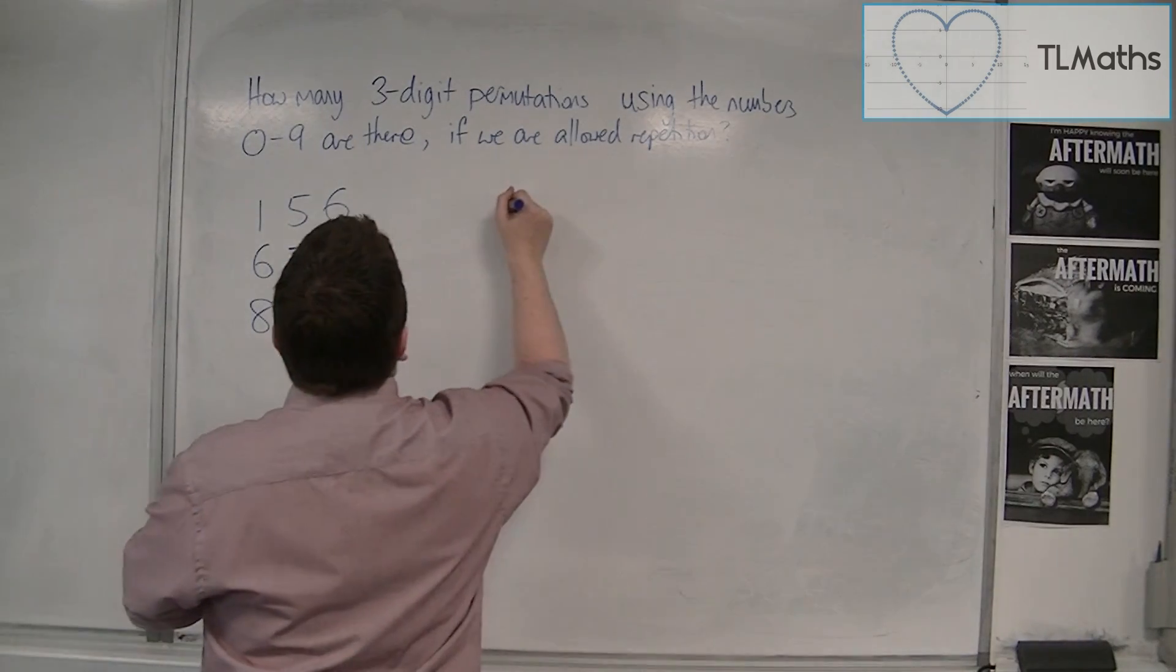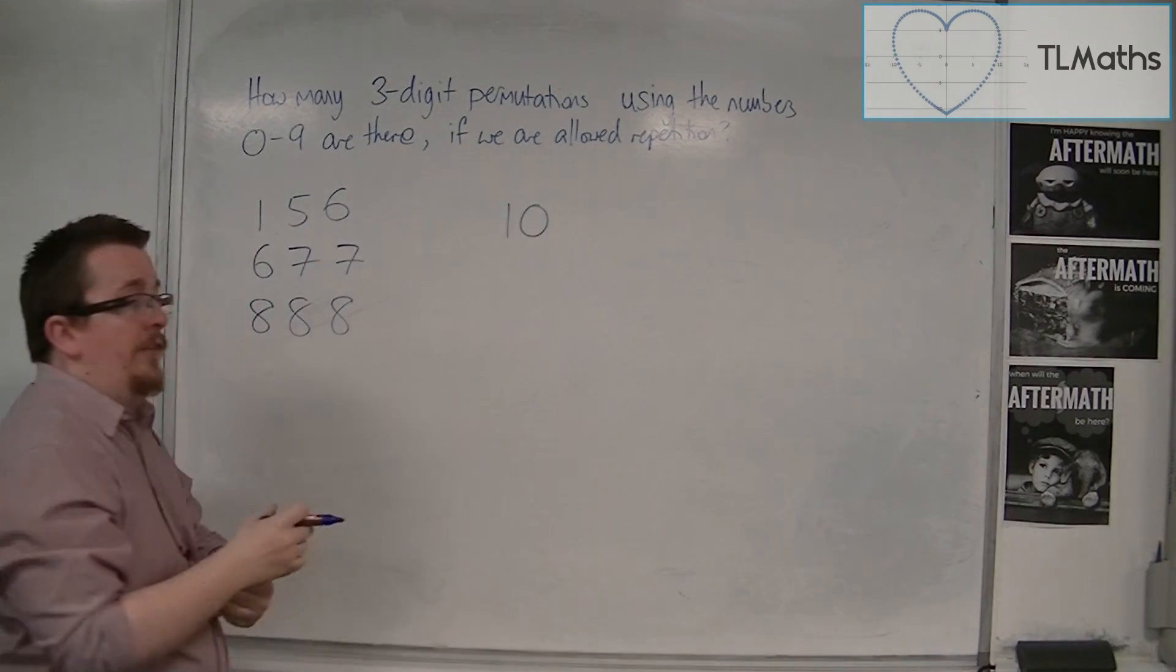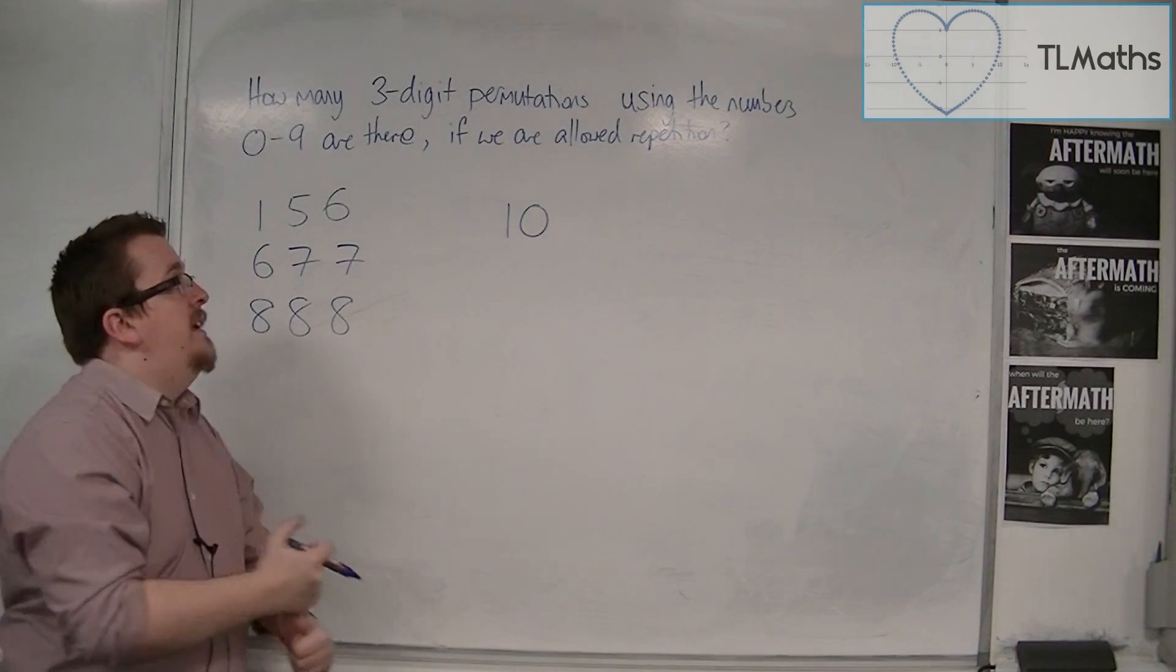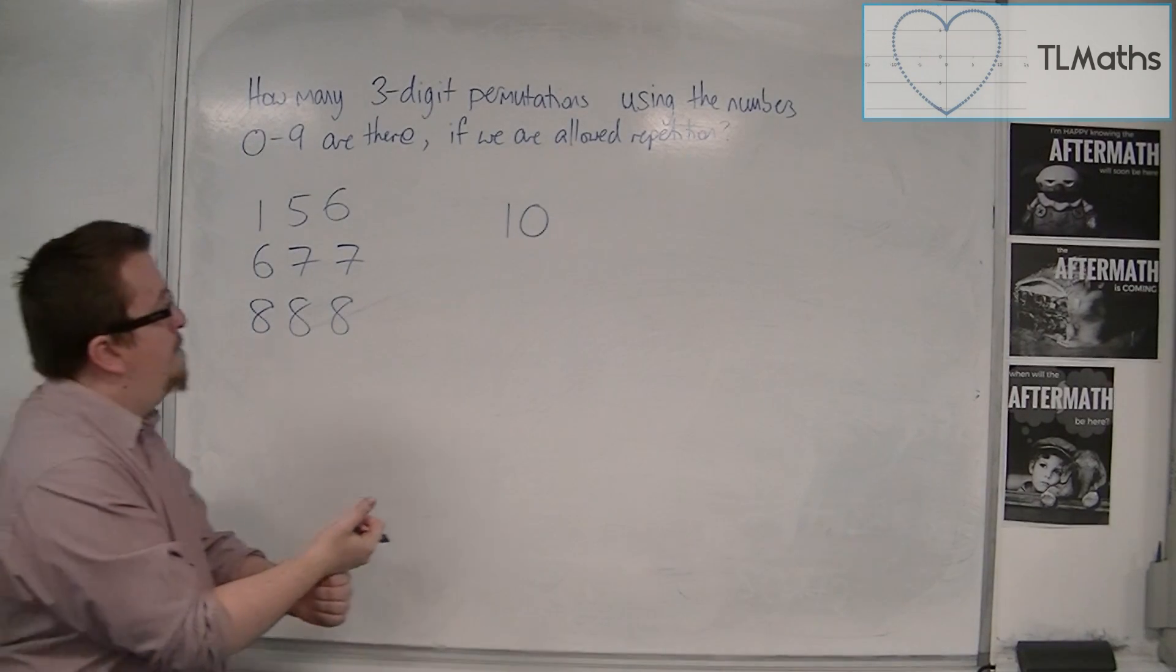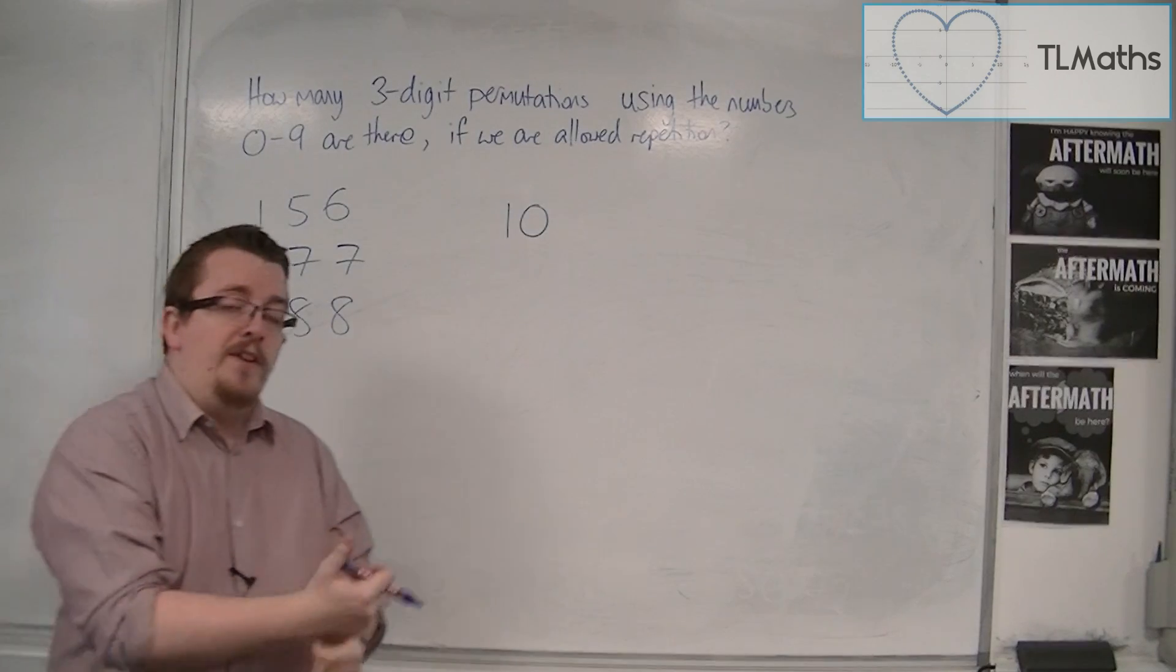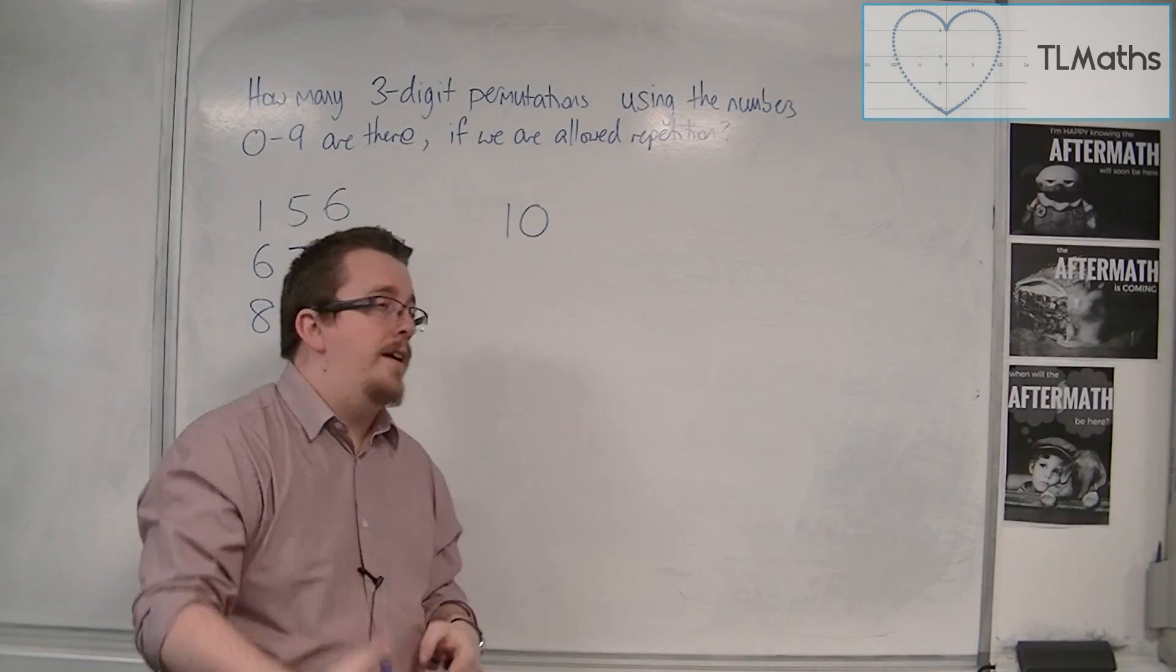Because if we're going to pick our first number in our code, in this case, then we've got 10 choices, 0 to 9.